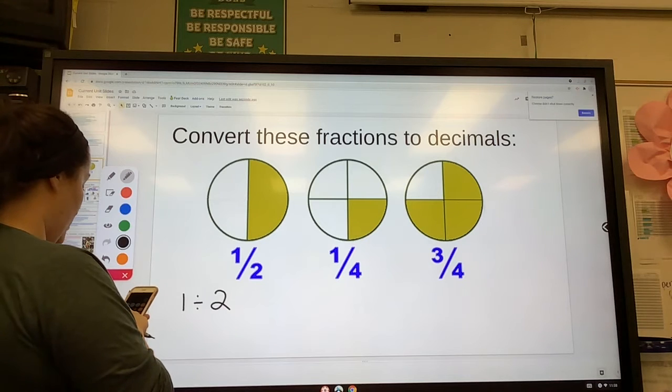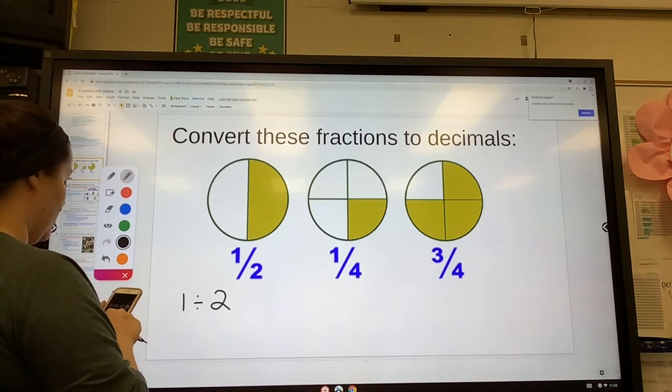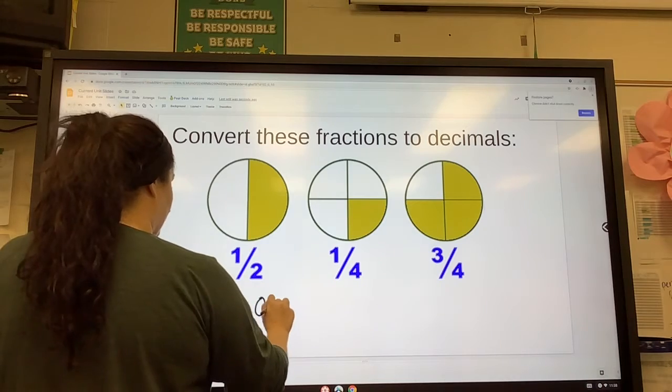Plugging it into my calculator, 1 divided by 2 on my phone equals 0.5.